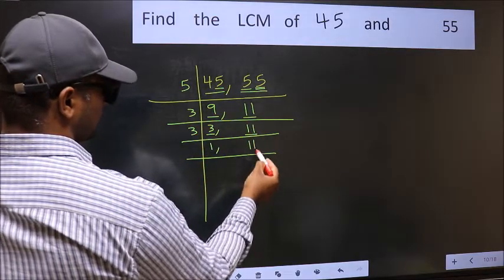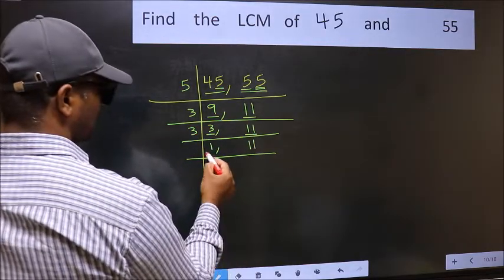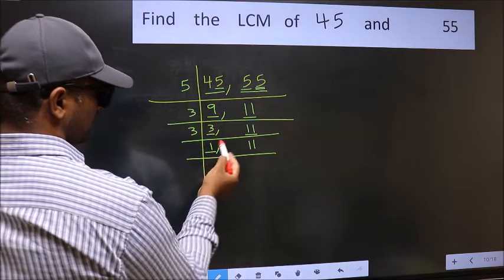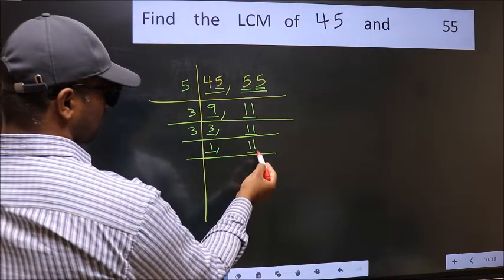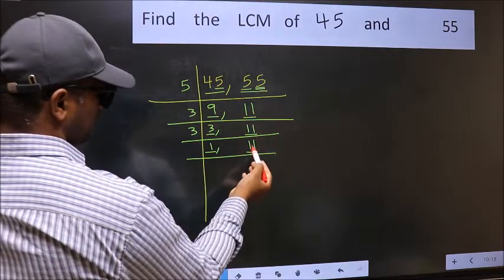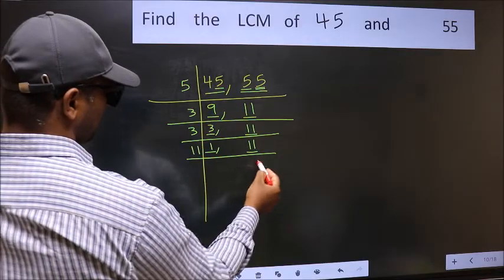Now here we have 3. 3 is a prime number, so 3 ones are 3. The other number 11 is not divisible by 3, so you write it down as it is. Now we got 1 here, so focus on the next number 11. 11 is a prime number, so 11 ones are 11.